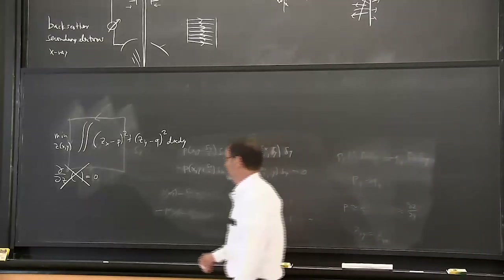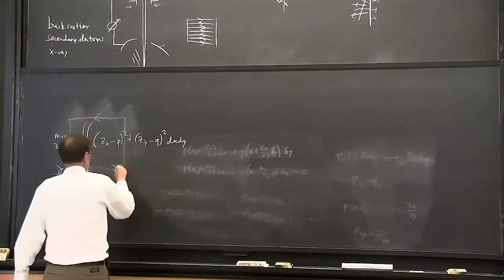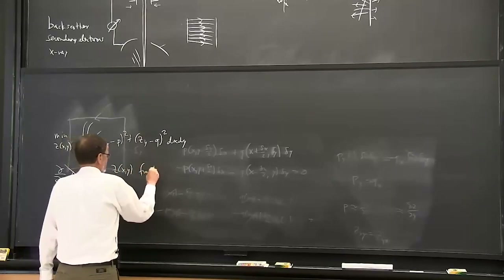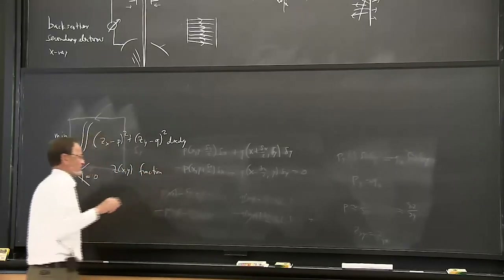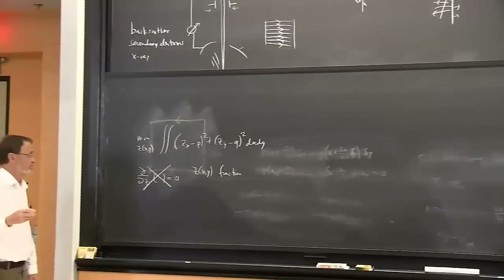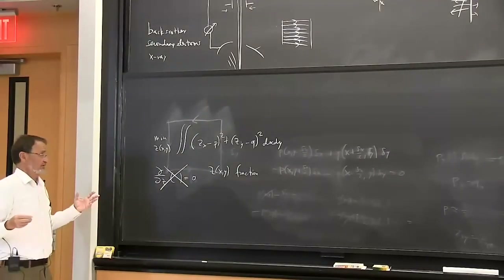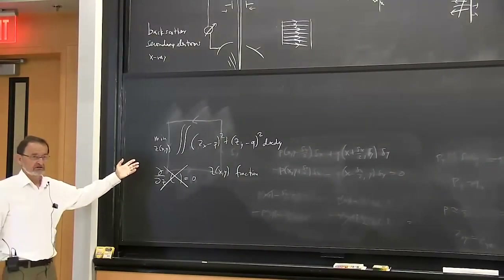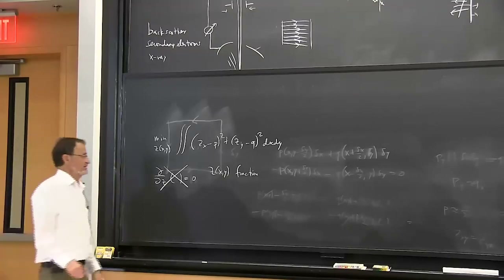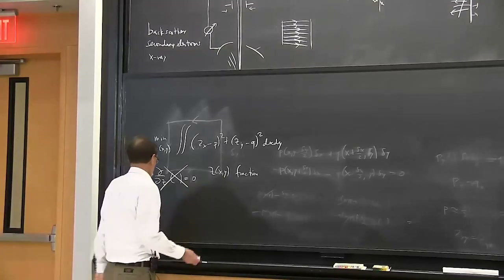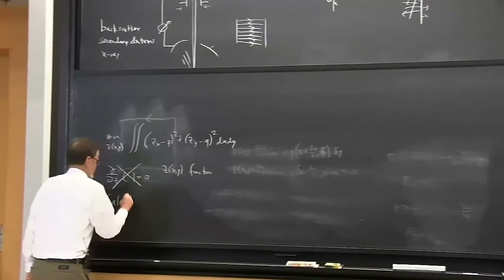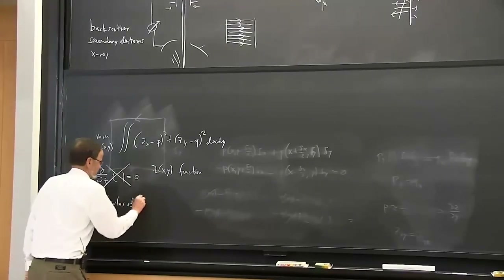Unfortunately, Z here is a function - not a finite number of parameters. There's no sensible way of talking about the derivative with respect to a function. It has not a finite number of degrees of freedom but an infinite number of degrees of freedom. There's a subject in mathematics that deals with that: calculus of variations.